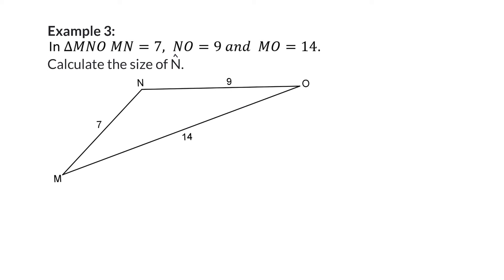Example 3. In triangle MNO, MN is 7, NO is 9, and MO is 14. Calculate the size of angle N. Once again, we are given only the three side lengths, and therefore, we are going to use the cos rule.